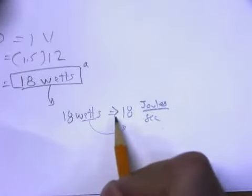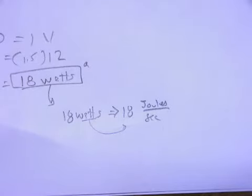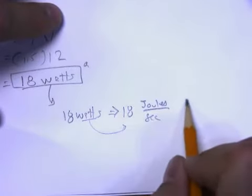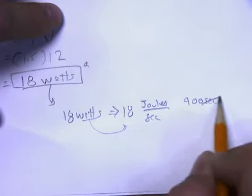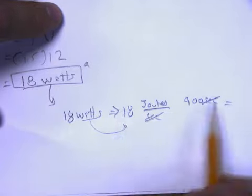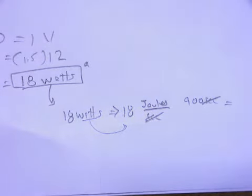Now, if we're running this thing for 15 minutes, 15 minutes is also 900 seconds. So you take 18 times 900, and you get 16,200 joules.